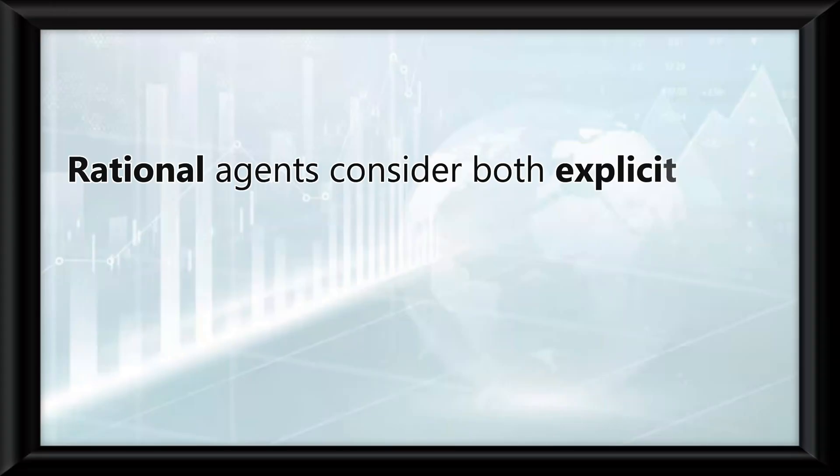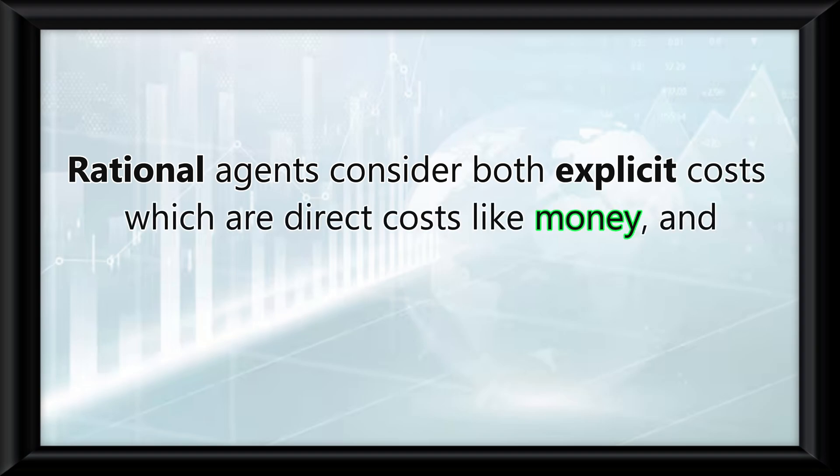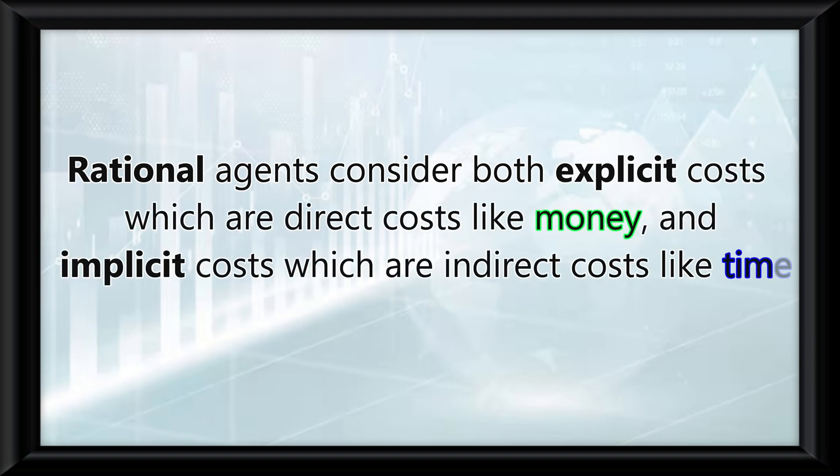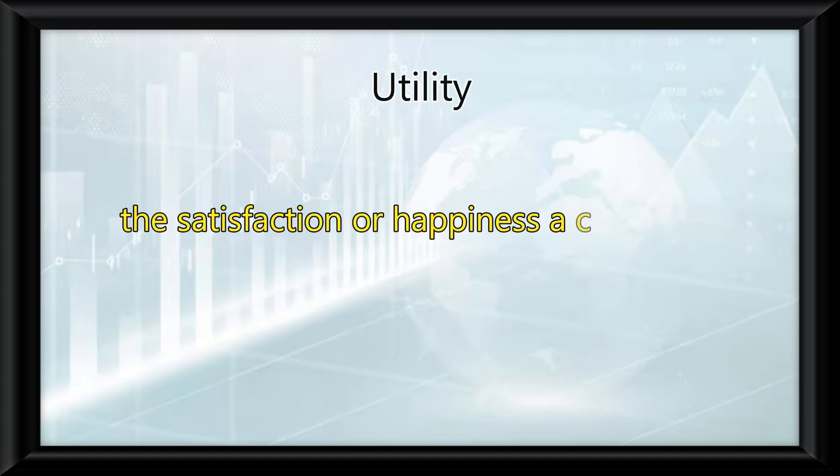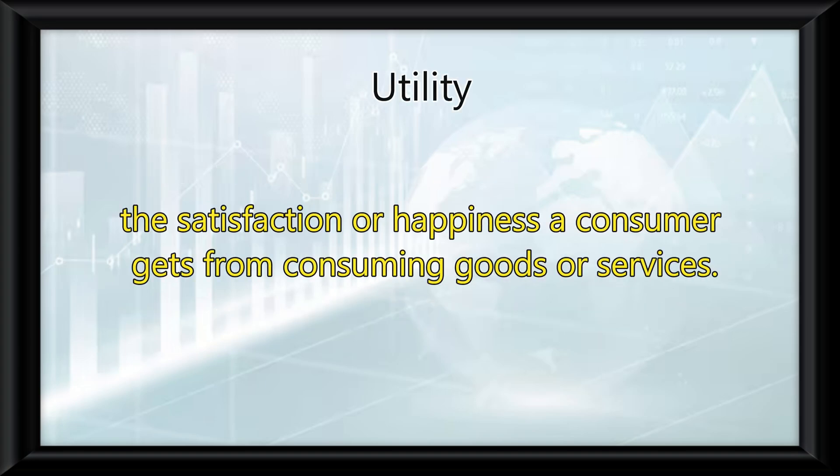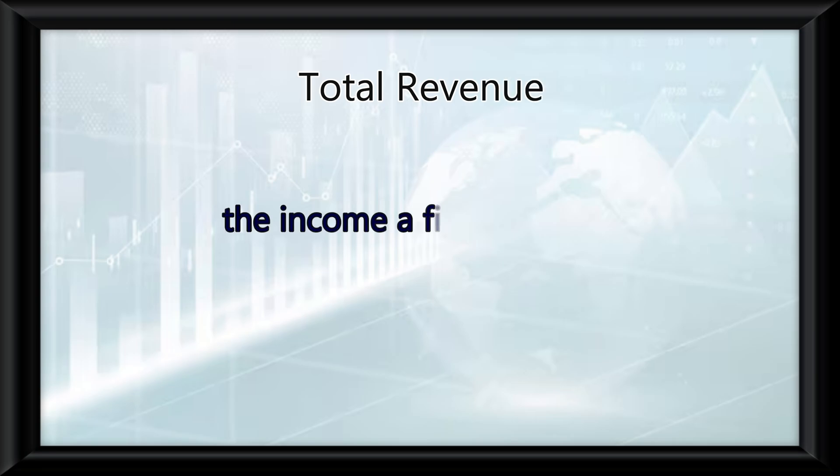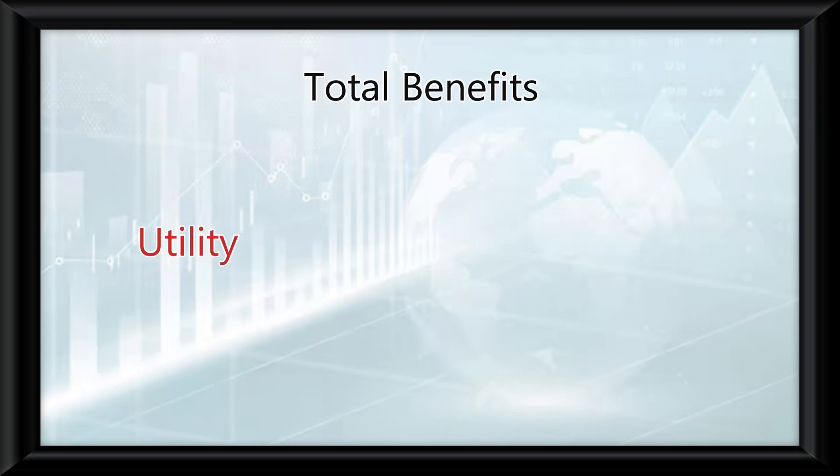Rational agents consider both explicit costs, which are direct costs like money, and implicit costs, which are indirect costs like time, when calculating total economic costs. Utility is the satisfaction or happiness a consumer gets from consuming goods or services. Total revenue refers to the income a firm receives from selling its product. Total benefits are measured as utility for consumers and total revenue for firms.